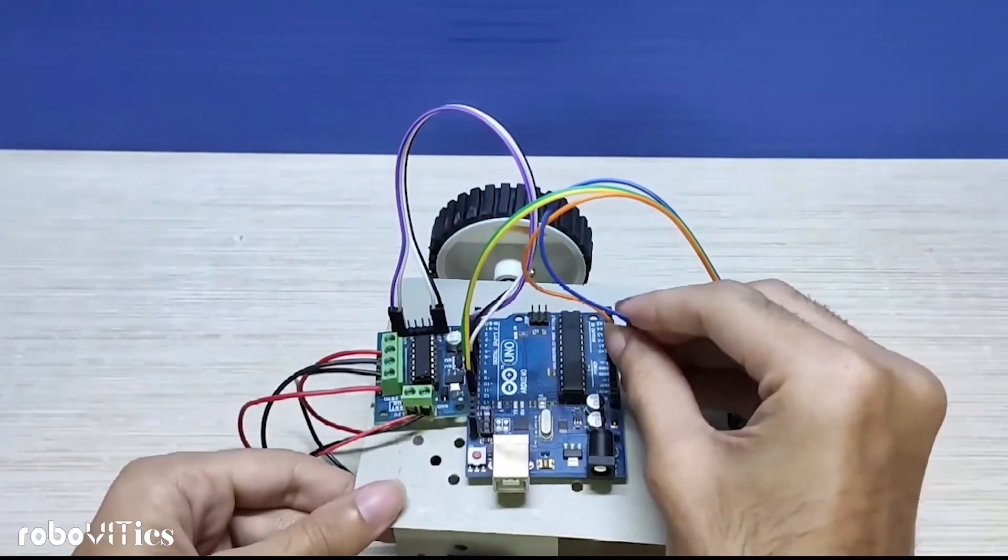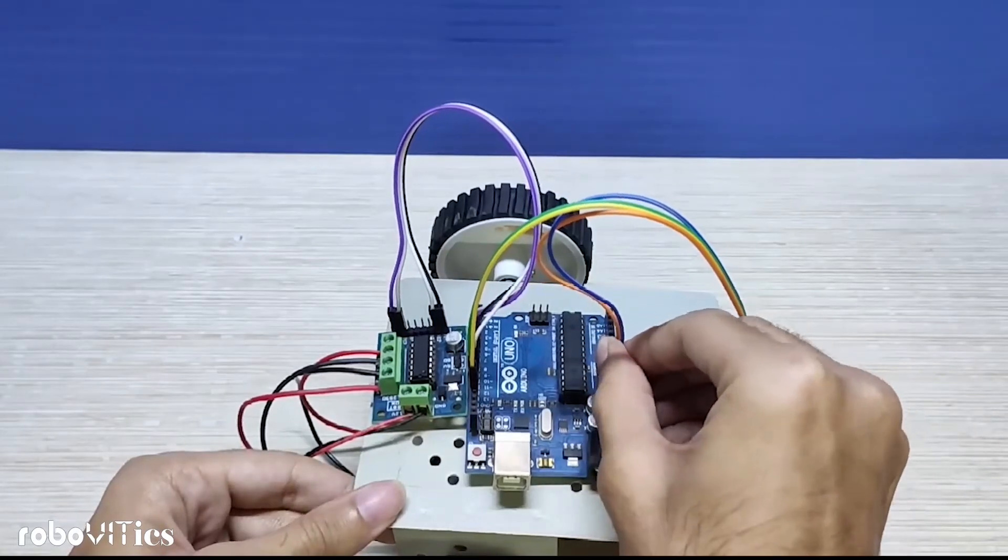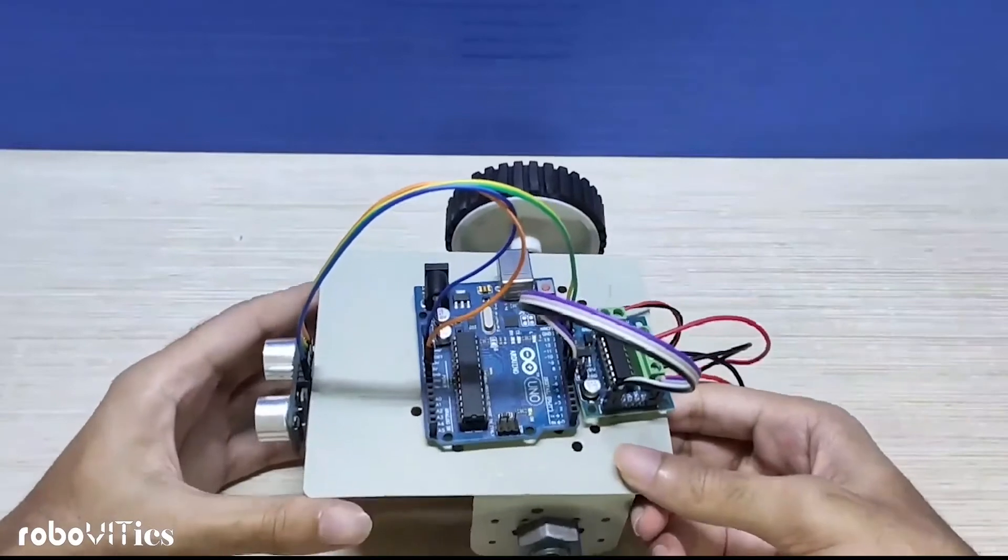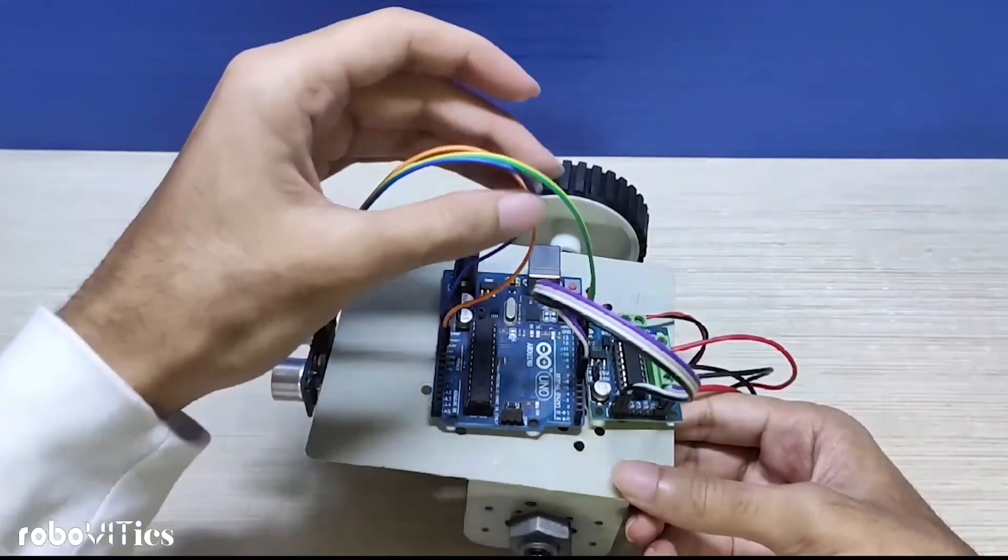Once this is done, your bot is ready. All you have to do now is connect it to your laptop and upload the code. Once it's connected, it is powered up and your obstacle avoider bot is ready.